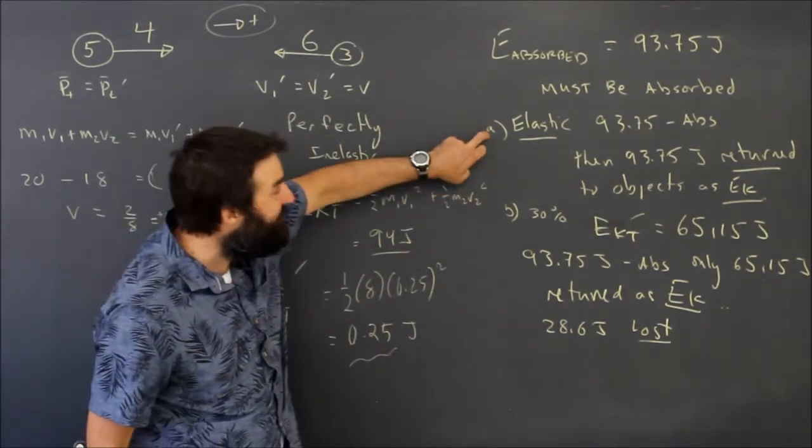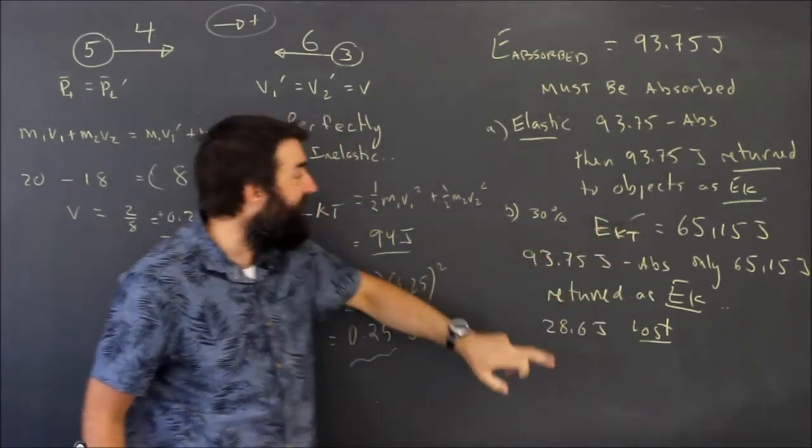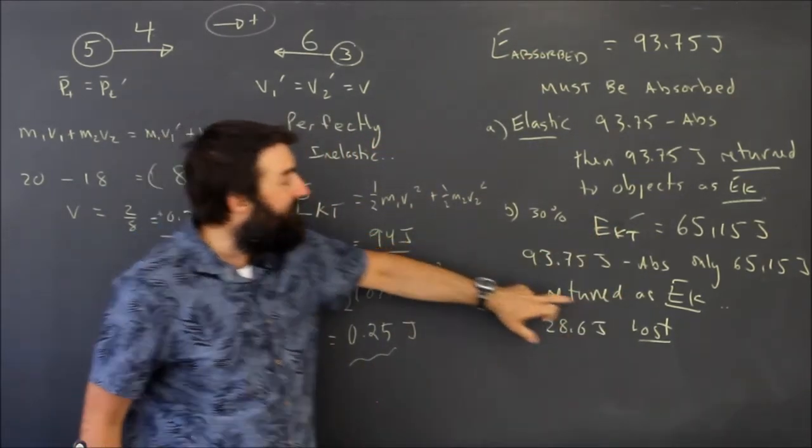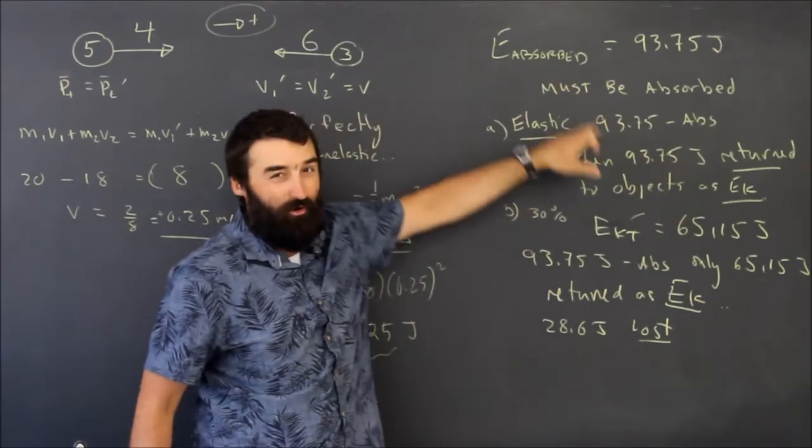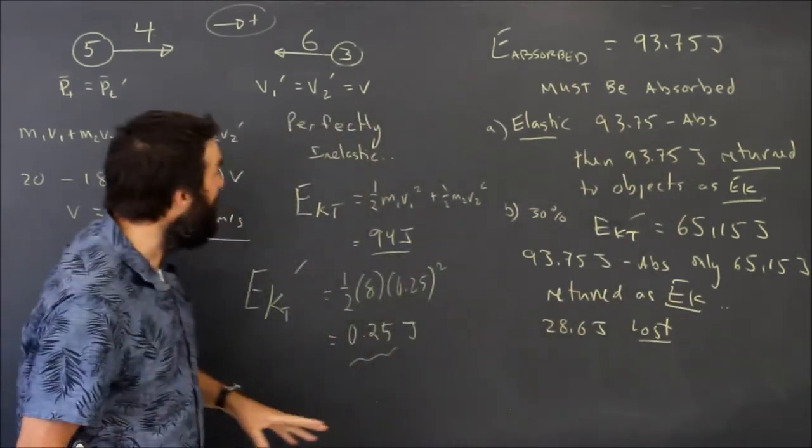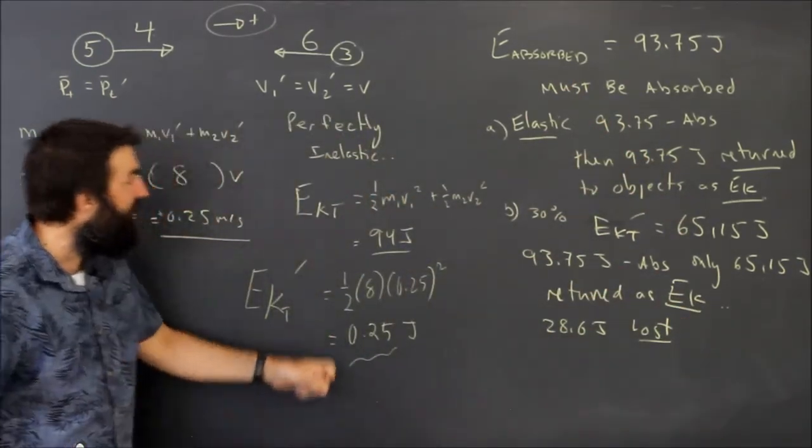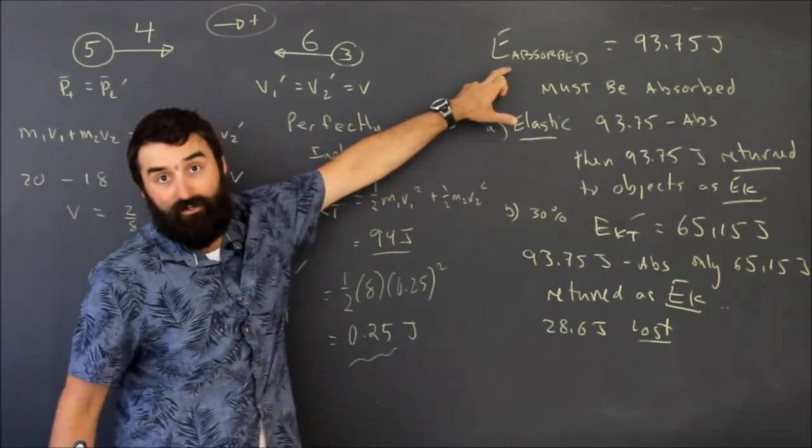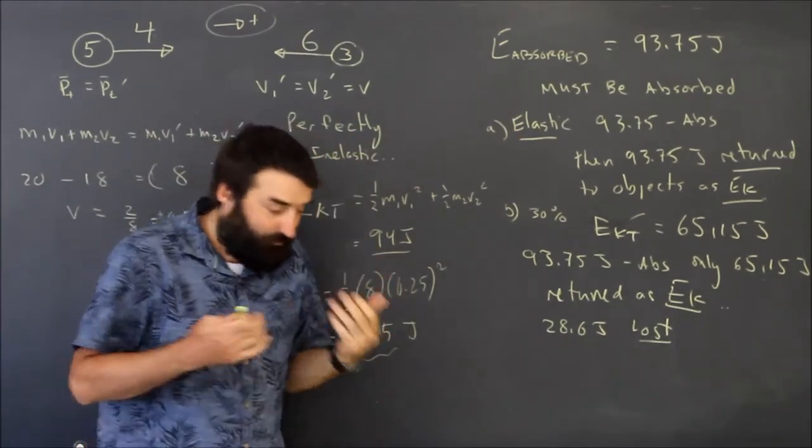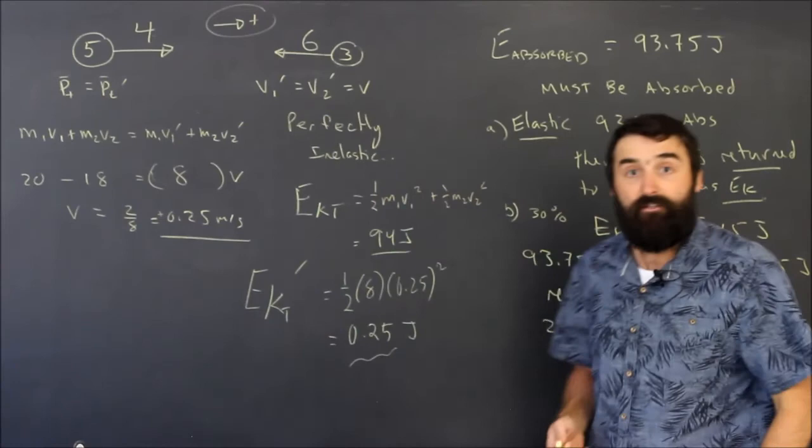In the elastic collision, all of the absorbed energy was returned. In the inelastic collision, less energy than was absorbed was returned. In the perfectly inelastic collision, none of the absorbed energy was returned. That's the real definition of the three types that you need to know.